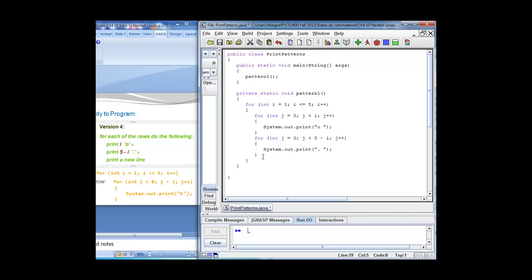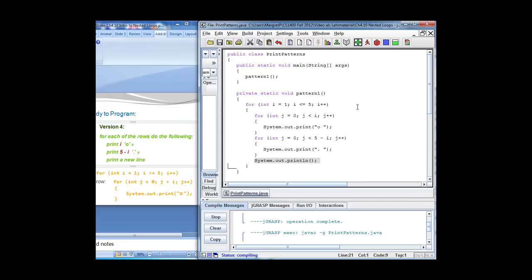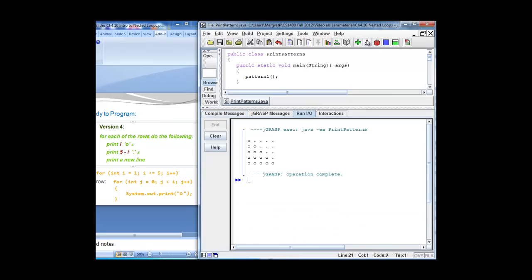The last thing I need to do is print a new line. And that is easy, so we'll say system out, print line. Three tasks we had to complete within our outer for loop. Task 1, print the circles. Task 2, print the dots. Task 3, print the new line. Let's compile. And let's run. And there is our pattern 1.